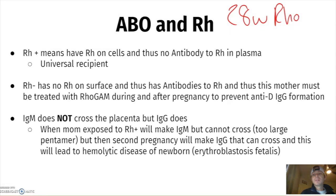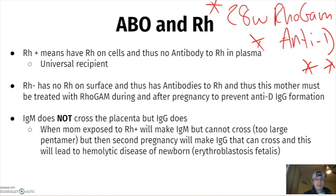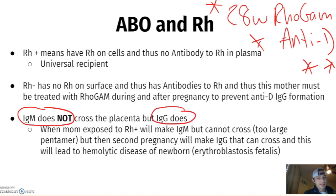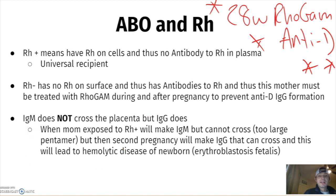ABO and Rh: pregnant women at 28 weeks get RhoGAM if they are Rh negative — meaning their red blood cells lack the Rh antigen. RhoGAM is also known as anti-D. Give it at birth, within 72 hours, or at 28 weeks. The key fact: IgM does not cross the placenta, but IgG does. The first exposure creates IgM (no problem), but the second exposure creates IgG, which can cross the placenta and cause hemolytic anemia — erythroblastosis fetalis.